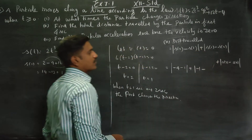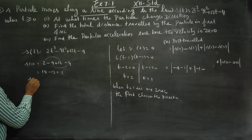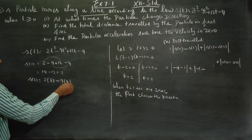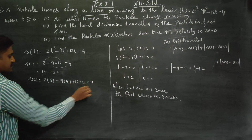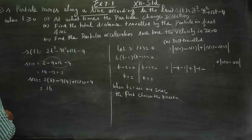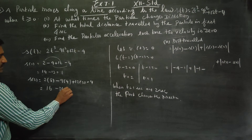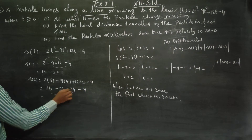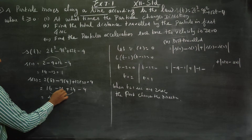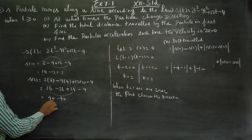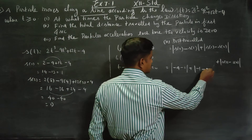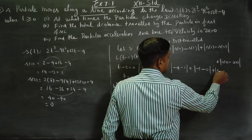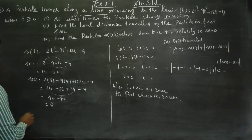Plus modulus of S(1) minus S(2). For S(2), substitute t equals 2: 2(8) minus 9(4) plus 24(2) minus 4 equals 16 minus 36 plus 48 minus 4 equals 24. Modulus of 13 minus 24 gives modulus, and 40 minus 40 is 0. So S(1) minus S(2) gives the second segment distance.